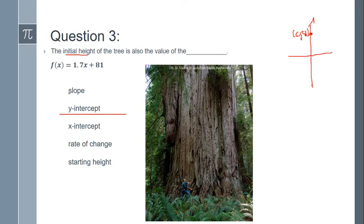Alright, let's see if anything else makes sense. Well, it's not the slope because 1.7 is the slope. That's how fast the tree is growing per year, right? It's not the x-intercept. We don't have anything in the equation that talks about that. It's not the rate of change because rate of change means slope, which is that 1.7.